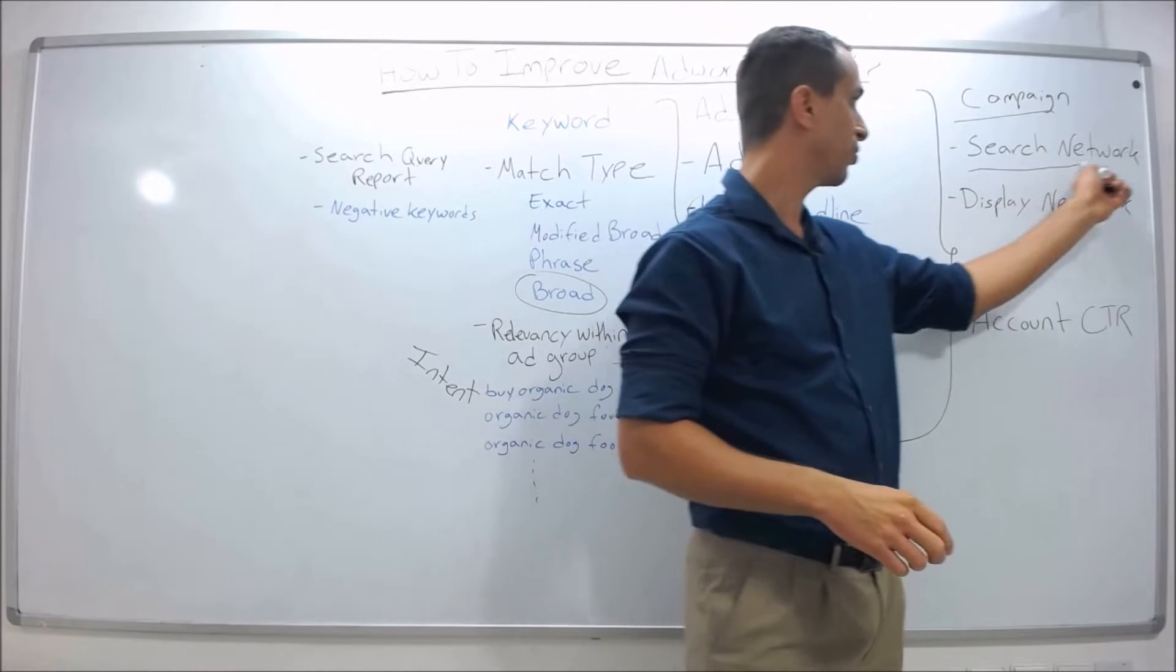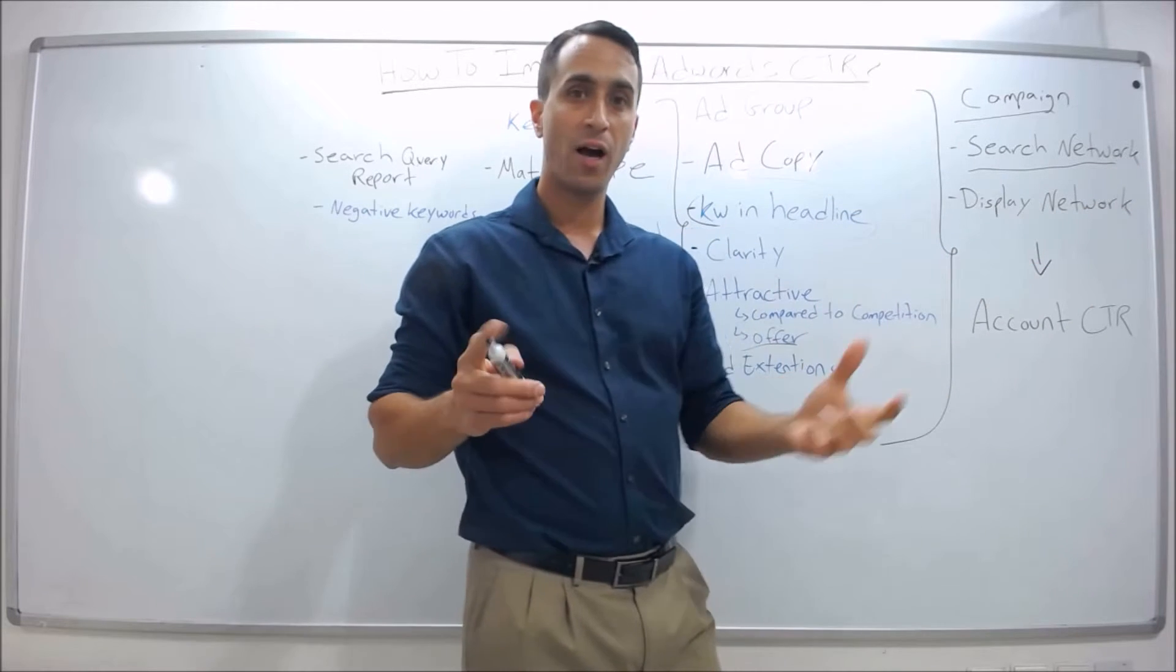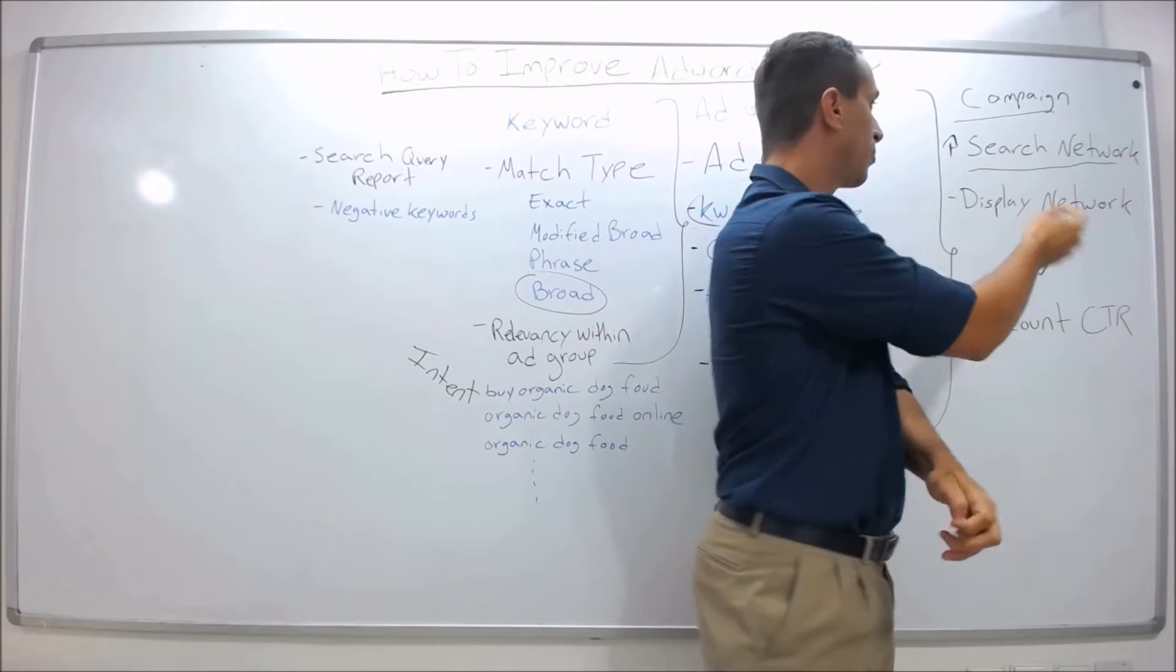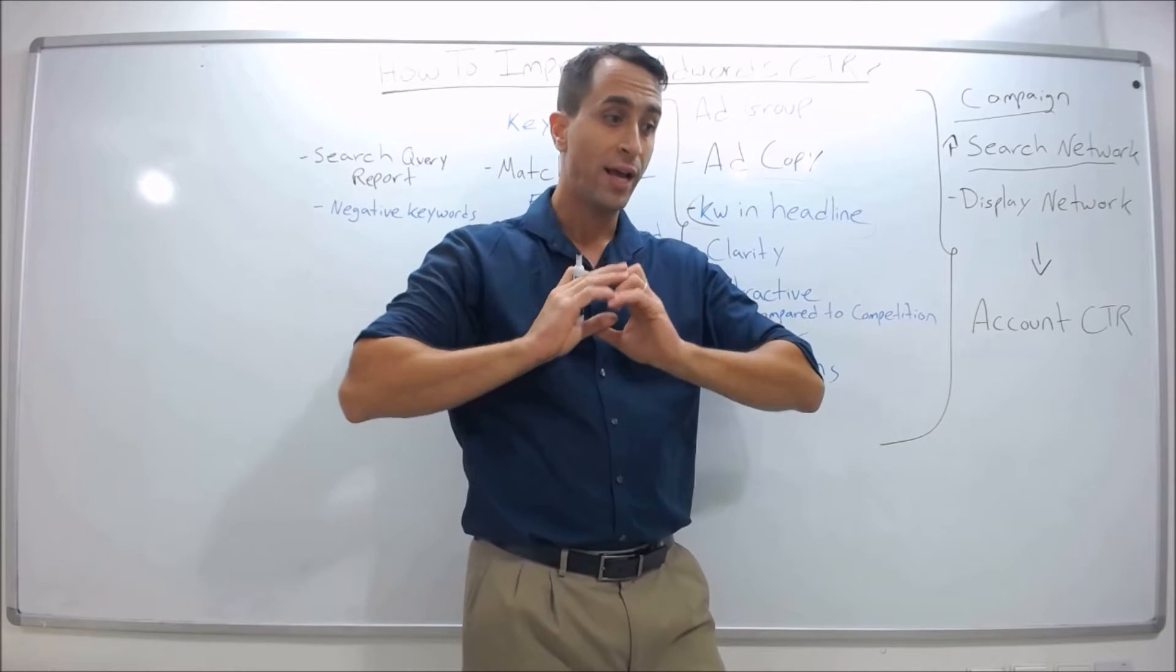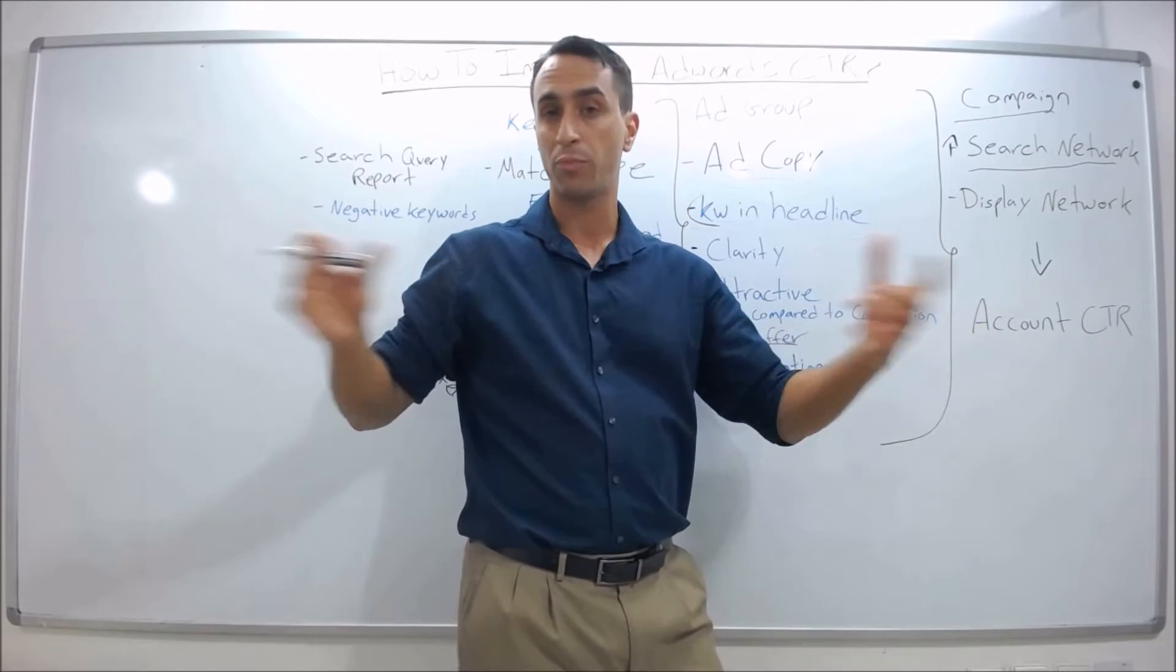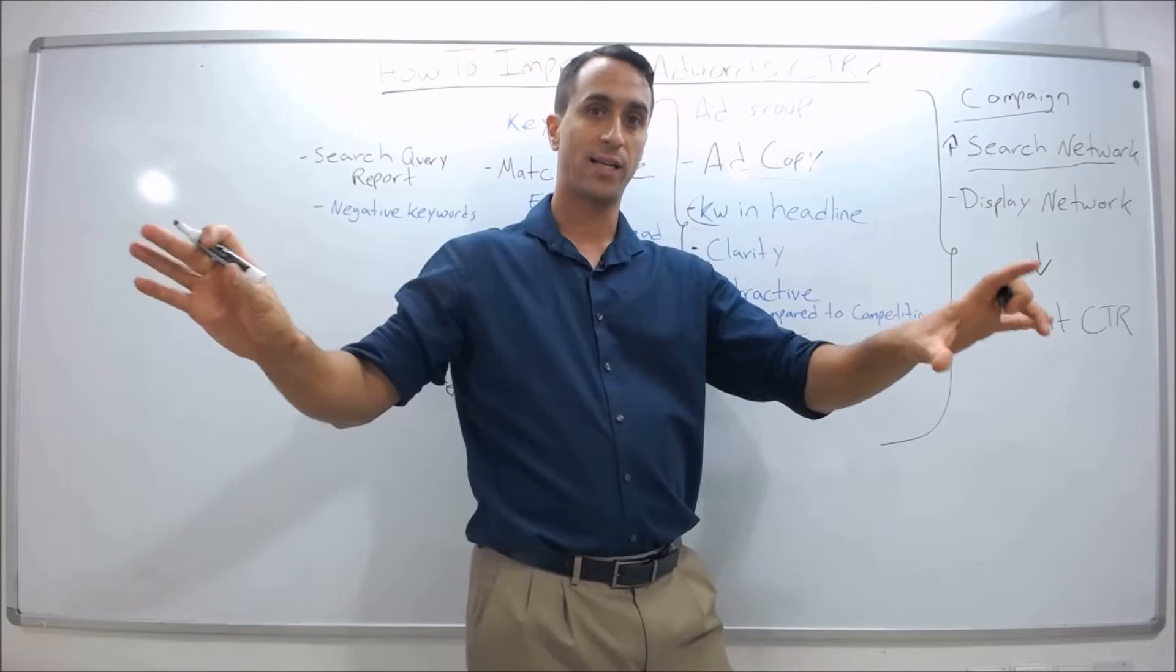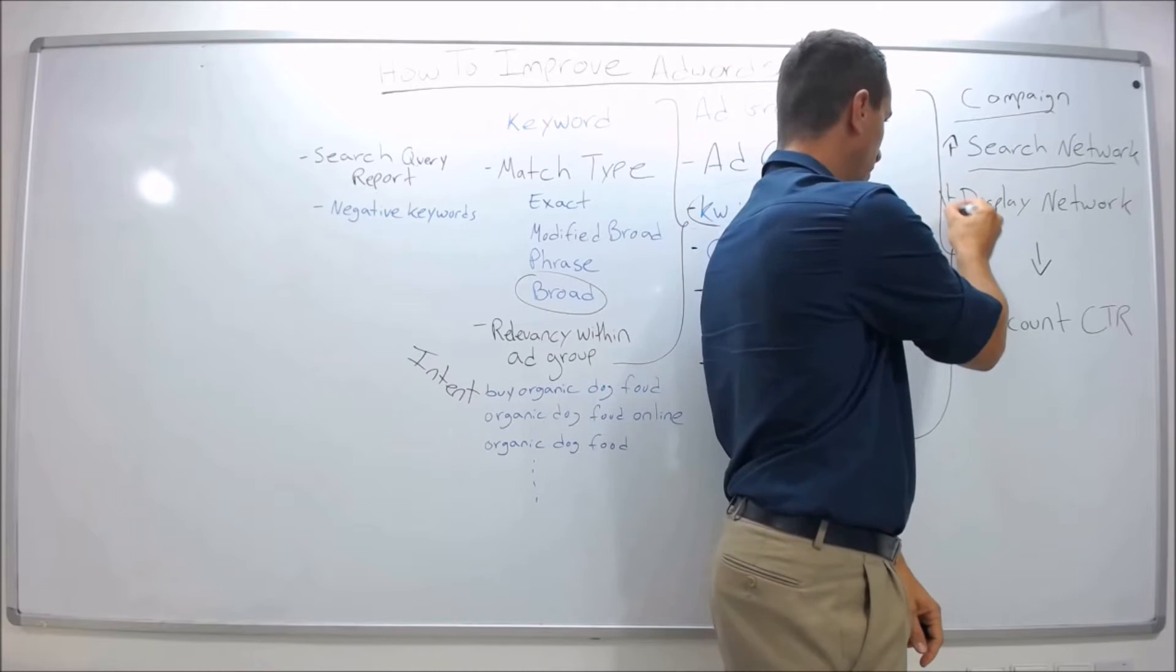One is the search network. The search network is when you go on Google.com and people are searching for you - the click-through rate is going to be higher. Display network is Google showing you on different blogs and relevant sites, so it's really casting a lot of impressions and your click-through rate is going to be lower.